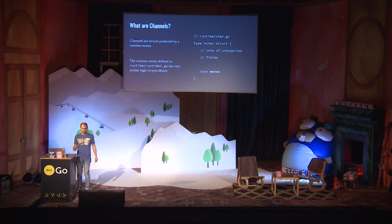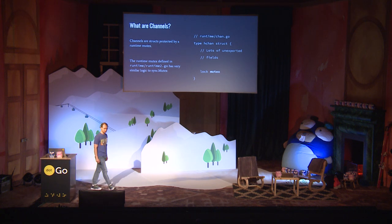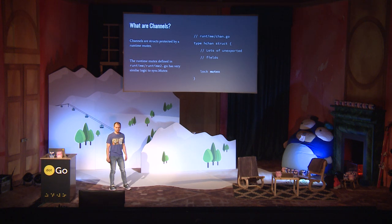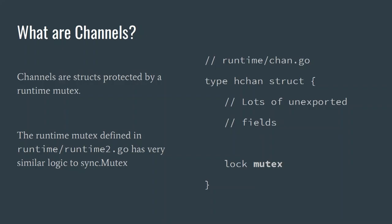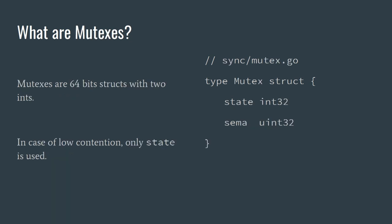If you use Go, you probably know channels. If you ever wonder what they are, they're just structs with a mutex in them. That is a runtime mutex, but it behaves very similarly to the sync mutex you're used to. So if you wonder what that is, that's two ints. That's it. End of the talk.